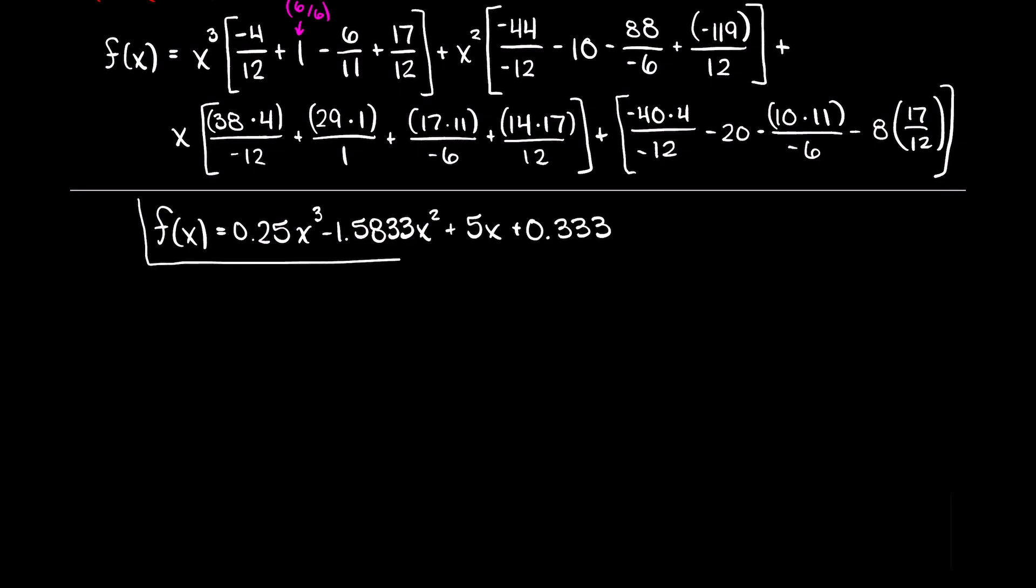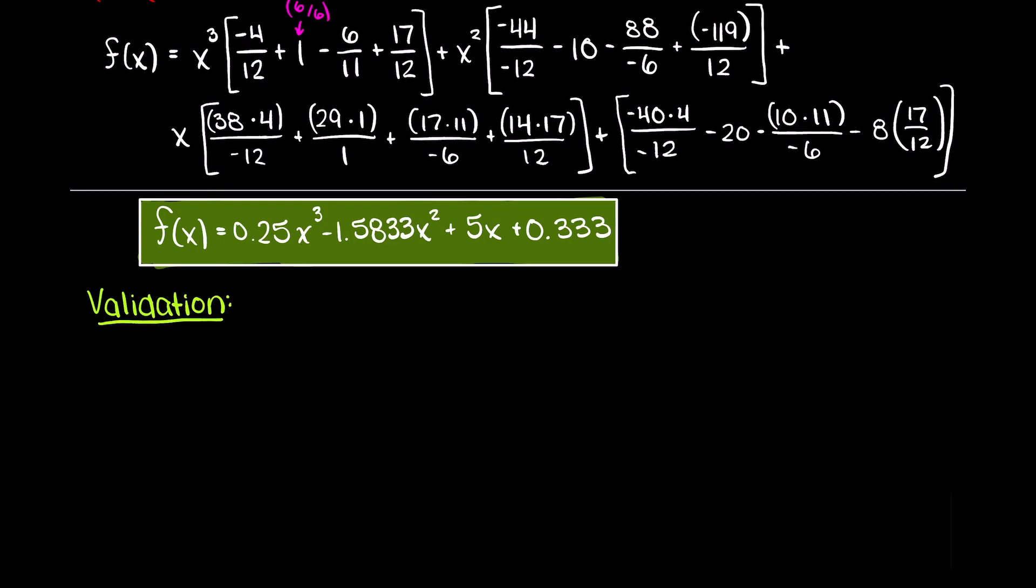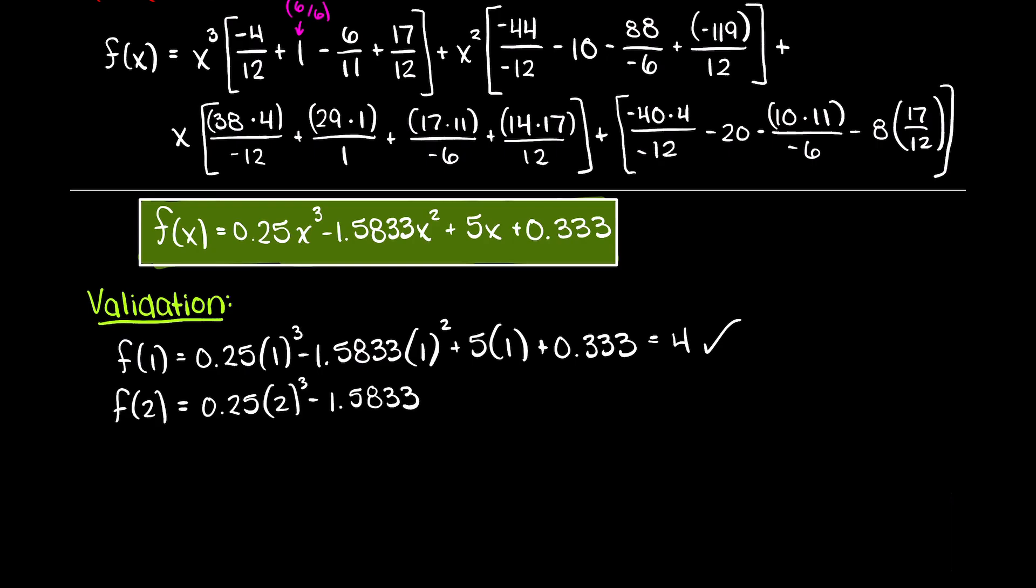As you can see, after grouping your common terms, we are left with a final interpolation function of 0.25x cubed minus 1.5833x squared plus 5x plus 0.33. Now if you want to actually do a quick check by plugging our x terms into our Lagrange polynomial, remember that when we are interpolating our function it needs to pass through all of our given data points, therefore by plugging in our x terms we need to get our y terms back. If we do not, that means that we made a mistake at some point in our calculations. I will just go ahead and complete that now.